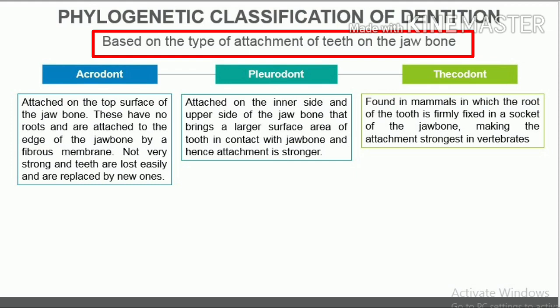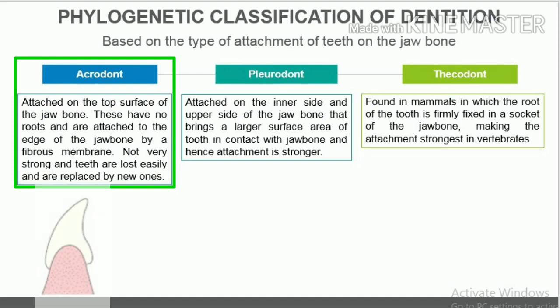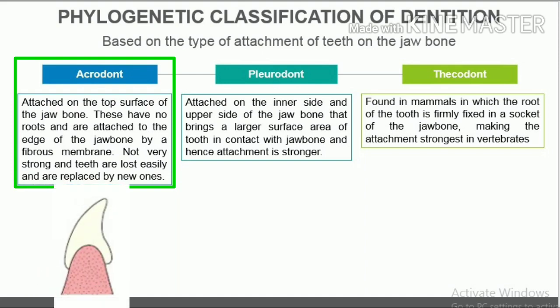Based on the type of attachment of teeth on the jawbone, the following three types are found in vertebrates: acrodont, pleurodont, and thecodont. Acrodont teeth are attached on the top surface of the jawbone. They have no roots and are attached to the edge of the jawbone by a fibrous membrane.